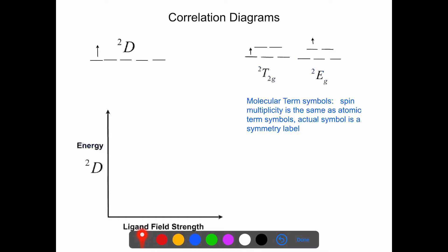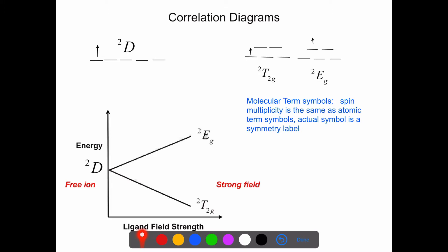In our correlation diagram, very similar to our crystal field, we start with our atomic term, with zero energy on the y-axis representing the free ion. We then increase the ligand field strength, increasing the crystal field. Just like our crystal field, we start with five degenerate orbitals, and as we increase the crystal field, we start to look more and more like our crystal field diagram, splitting into the T2G and EG sets. The stronger the bond strength, the lower the energy of T2G and the higher the energy of our doublet EG state. On this diagram we can identify our delta octahedral. This is our correlation diagram for a D1 system.